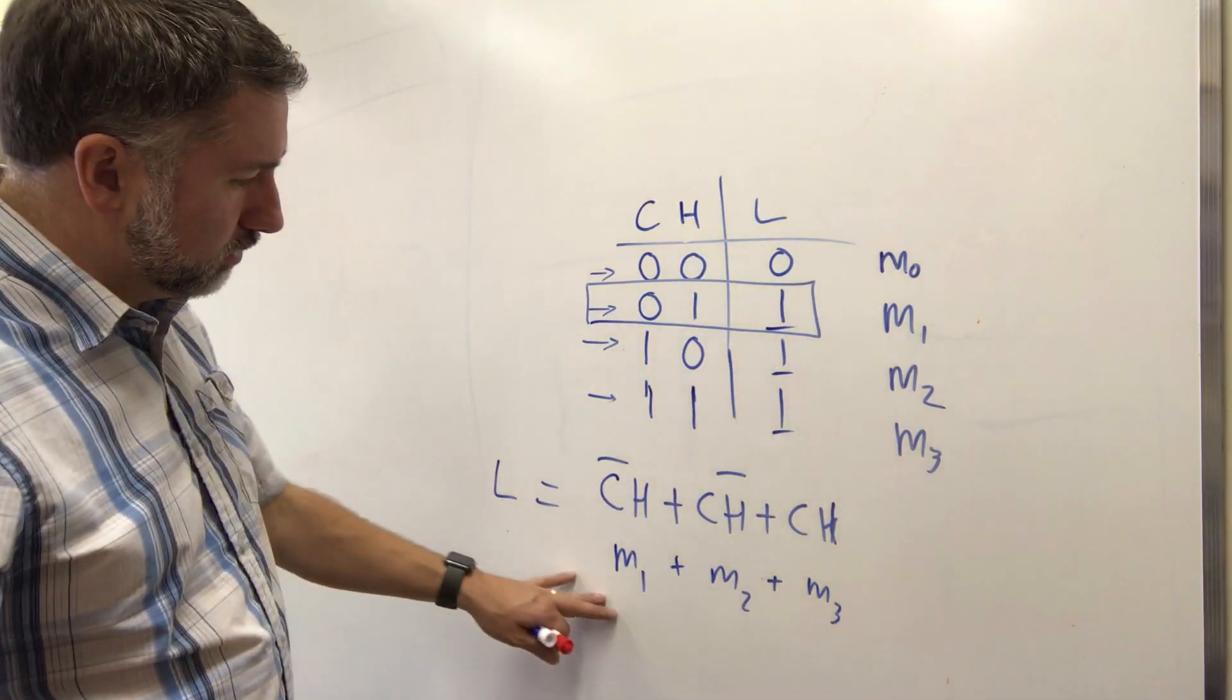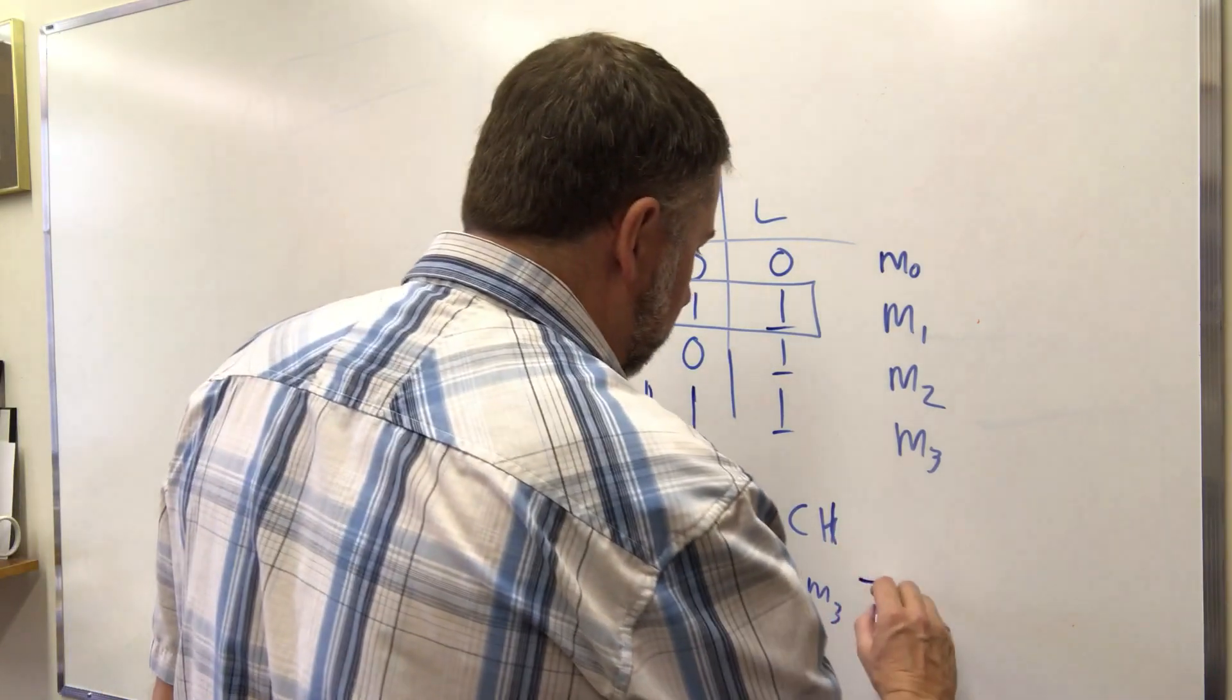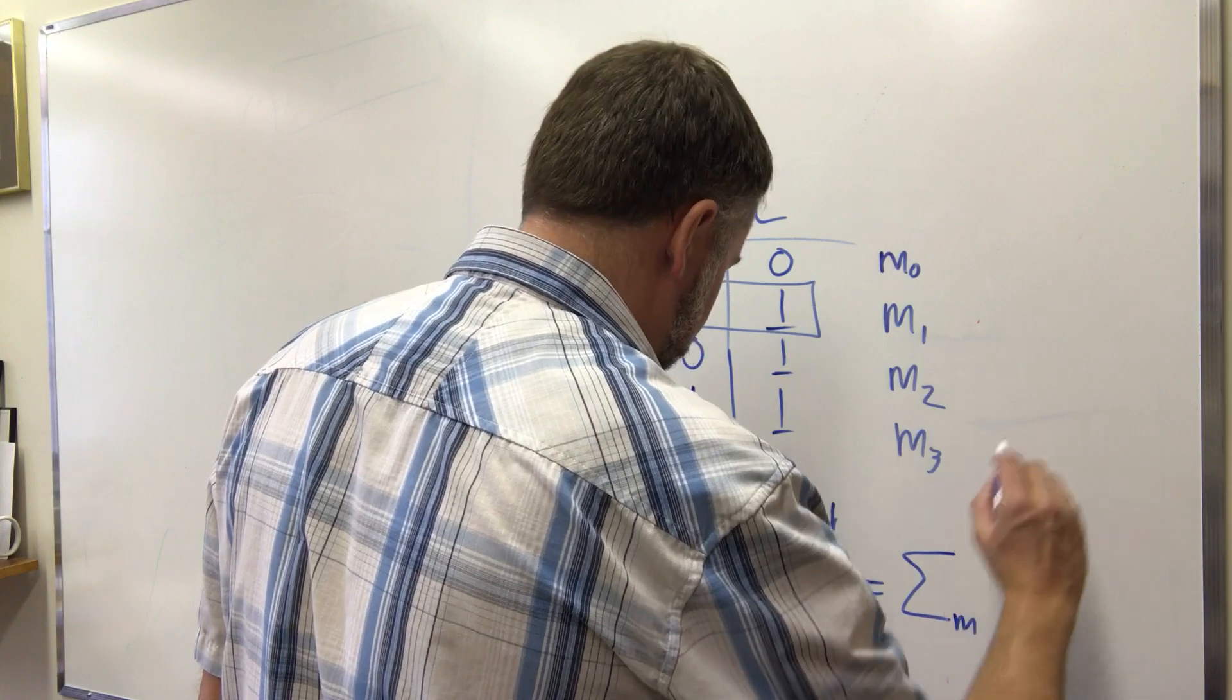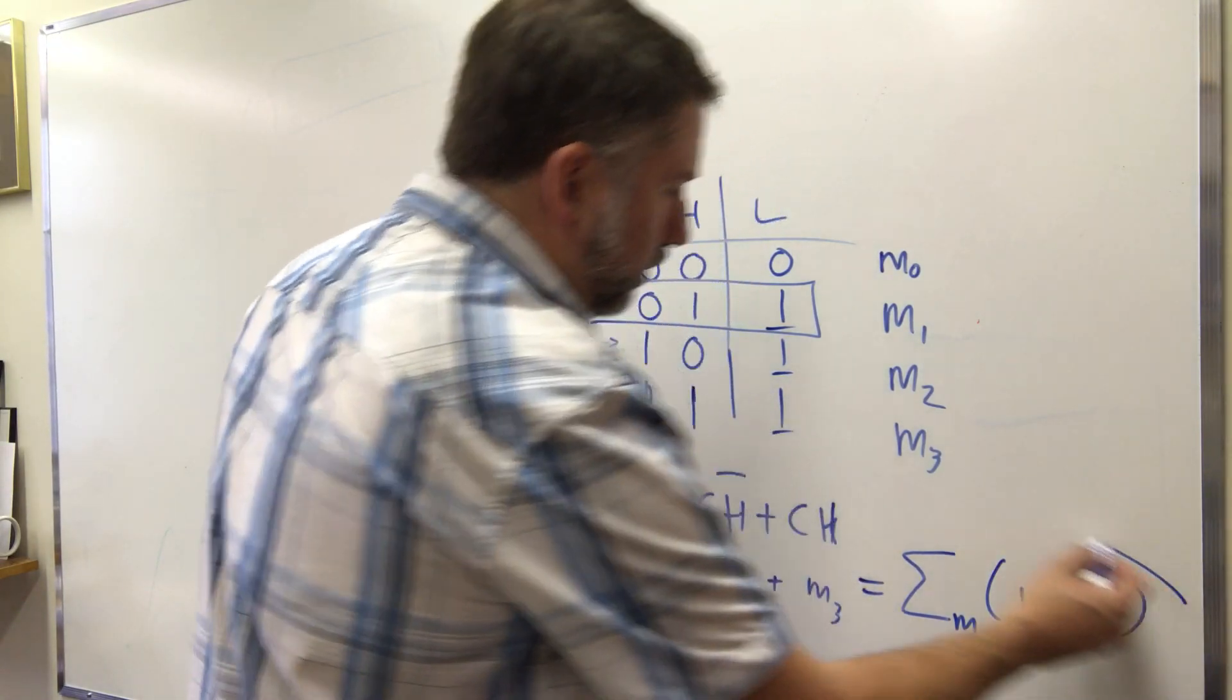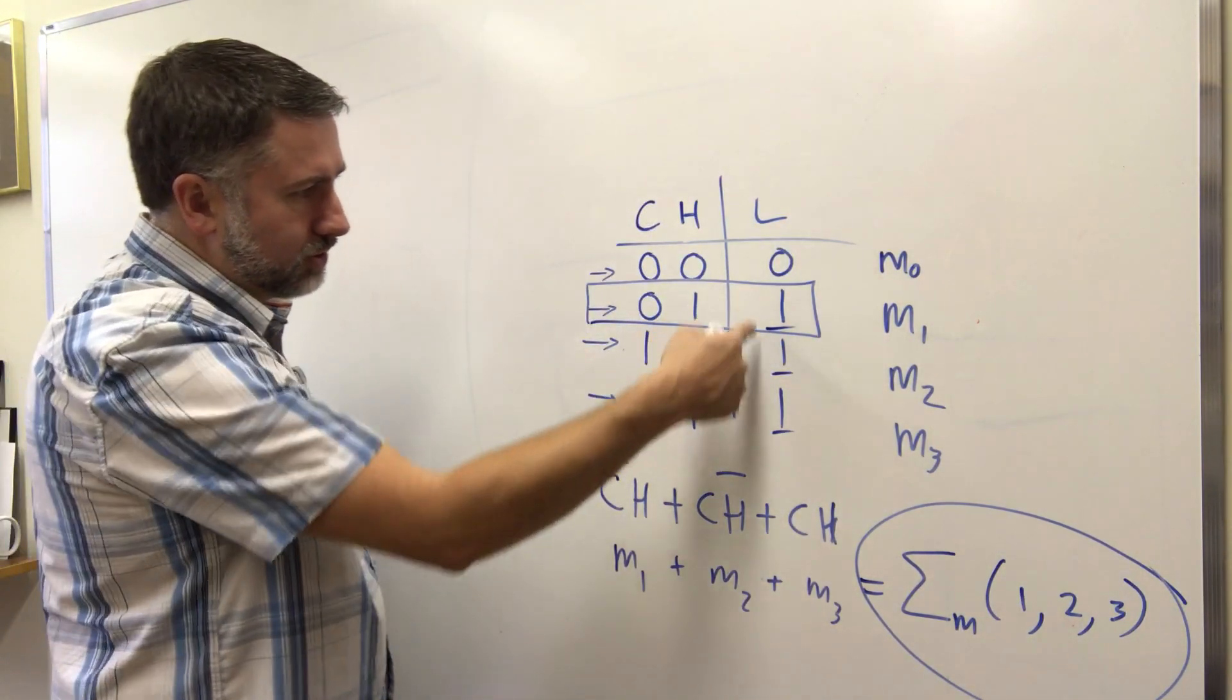So this is L is minterm 1, minterm 2, minterm 3. And we can also call that a sum of minterms 1, 2, and 3. So this is a shorthand for the logical expression that corresponds to this set of inputs.